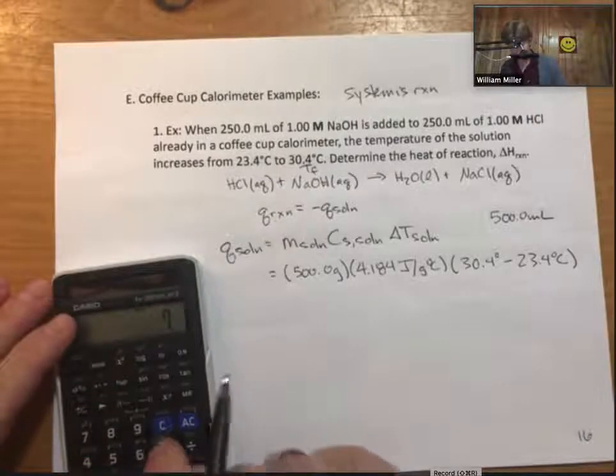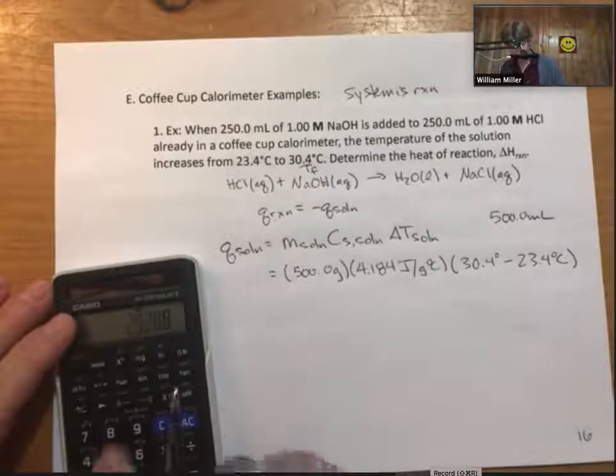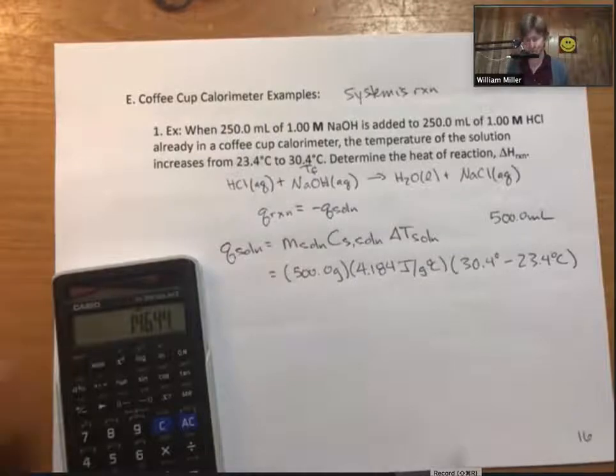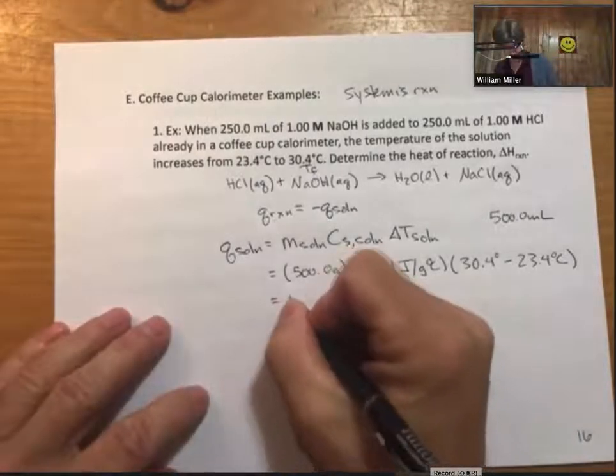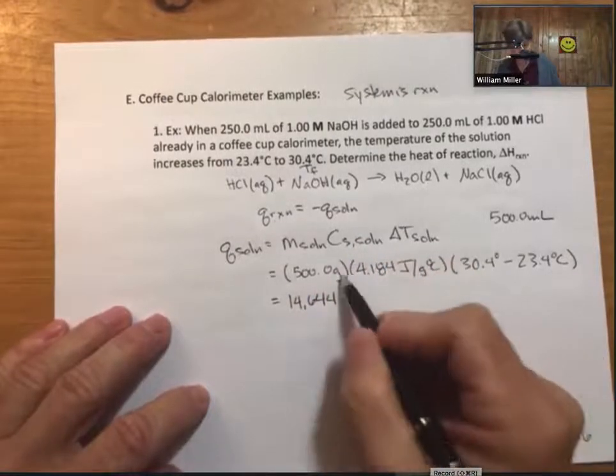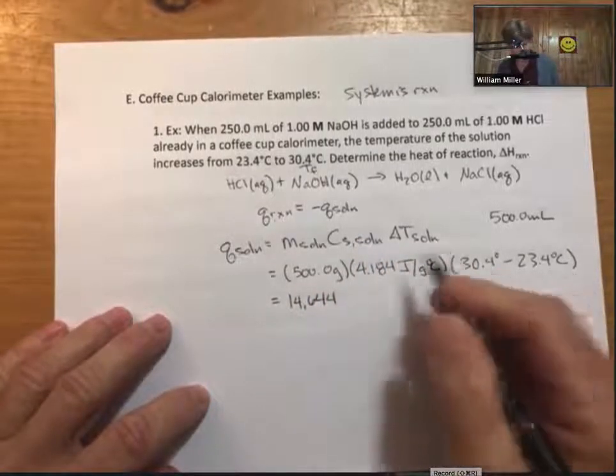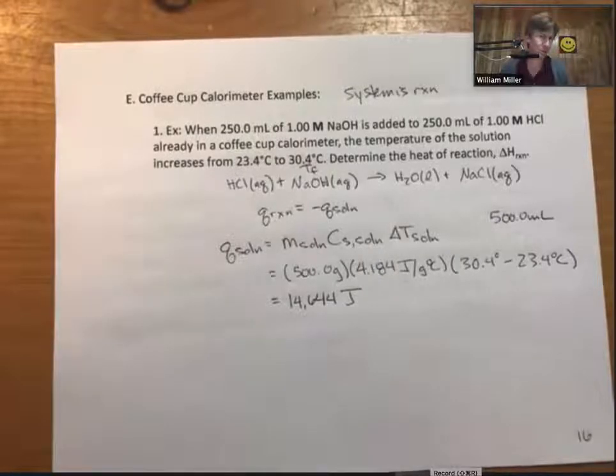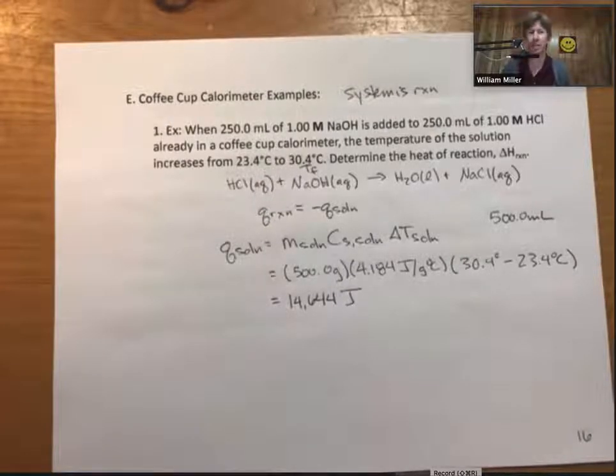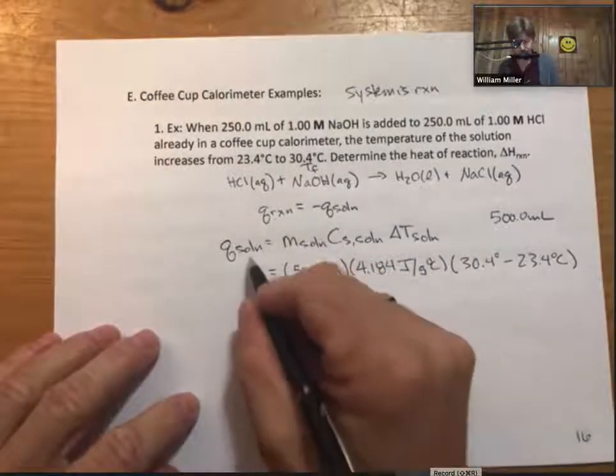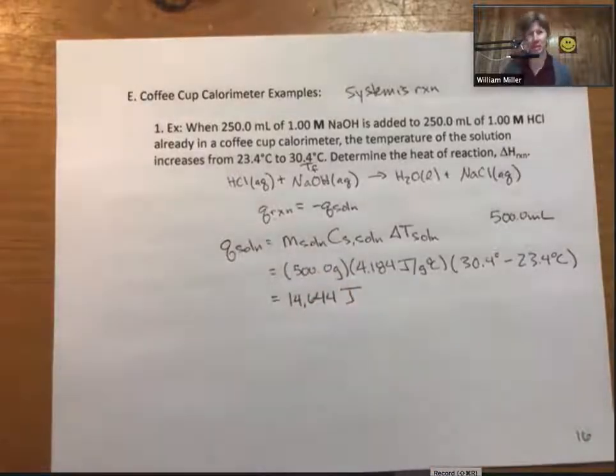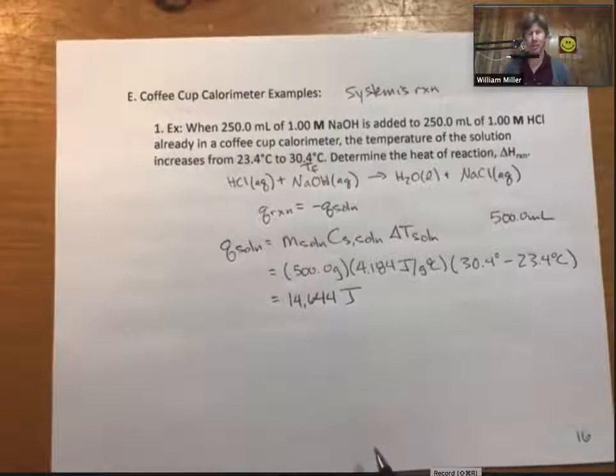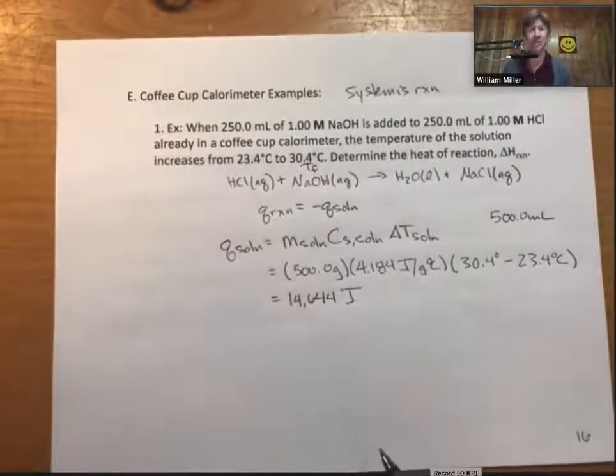The specific heat capacity of solution is the same as that of water. T final is 30.4 degrees, T initial is 23.4 degrees. We have all the information to find Q solution. Let's do the temperature change first: 7 degrees times 4.184 times 500 equals 14,644. Our grams cancel and our degrees celsius cancel, so that's joules.